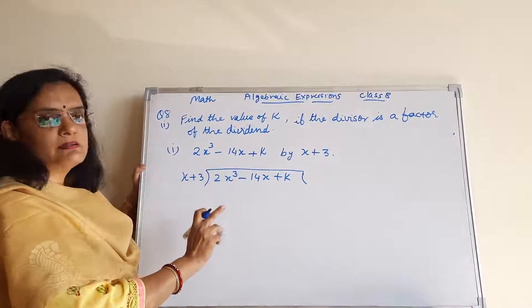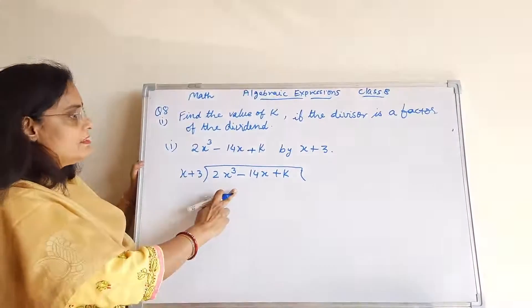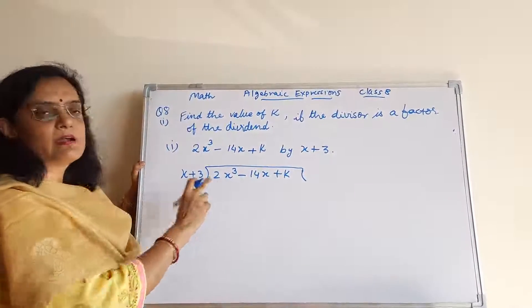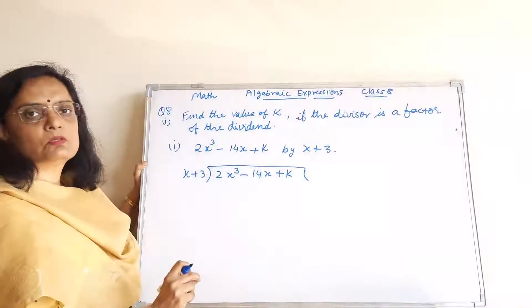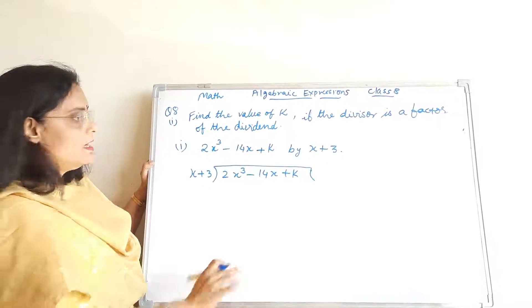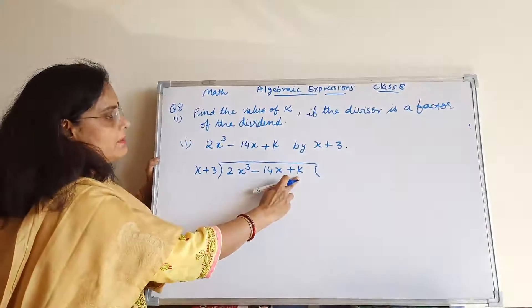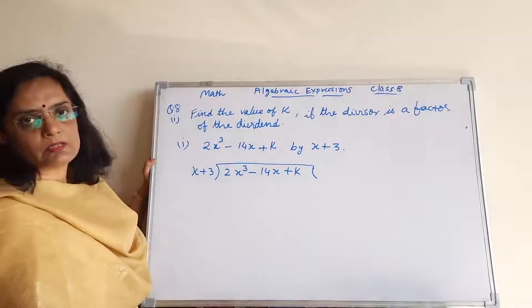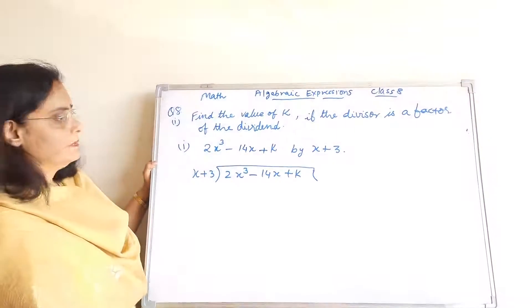Divisor, dividend ka factor tabhi hota hai jab remainder 0 ho. (A divisor is a factor of the dividend only when the remainder is 0.) Ab yahan pe humein K ki value pata karni hai.